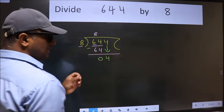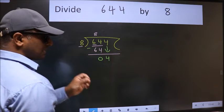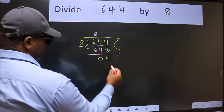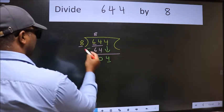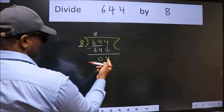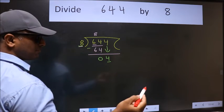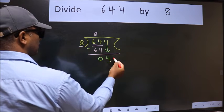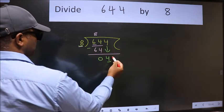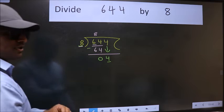After this step, the mistake happens. And the mistake is this: here we have 4 and here 8. 4 is smaller than 8, so what many do is they directly put dot, take 0. Which is wrong.